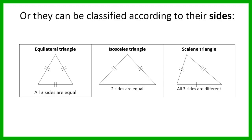Then we have our second method, which is to classify triangles based on the sides. Here we have the equilateral triangle — think of 'equal' meaning the same — so all three sides are equal to each other. In an isosceles triangle, we've got two sides that are equal and the other side is different. And then we've got a scalene triangle, where all three sides are different lengths. So we have two ways of classifying triangles: based on their angles, or based on their sides.